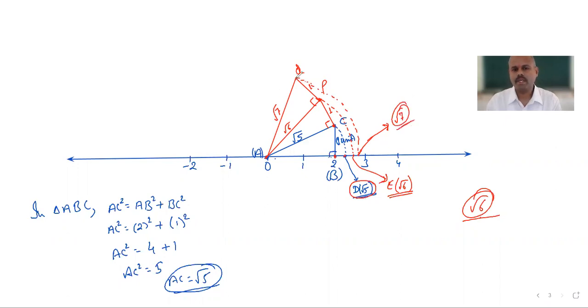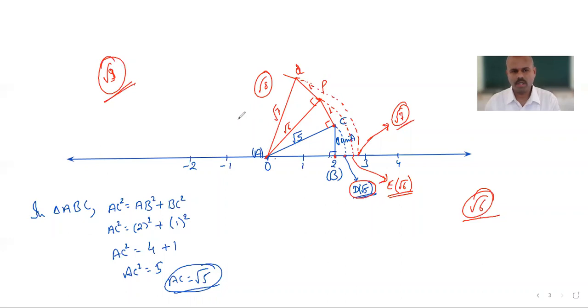Continuing in the same way, we get √8. Then √9 is 3 itself, so it is already on the number line.